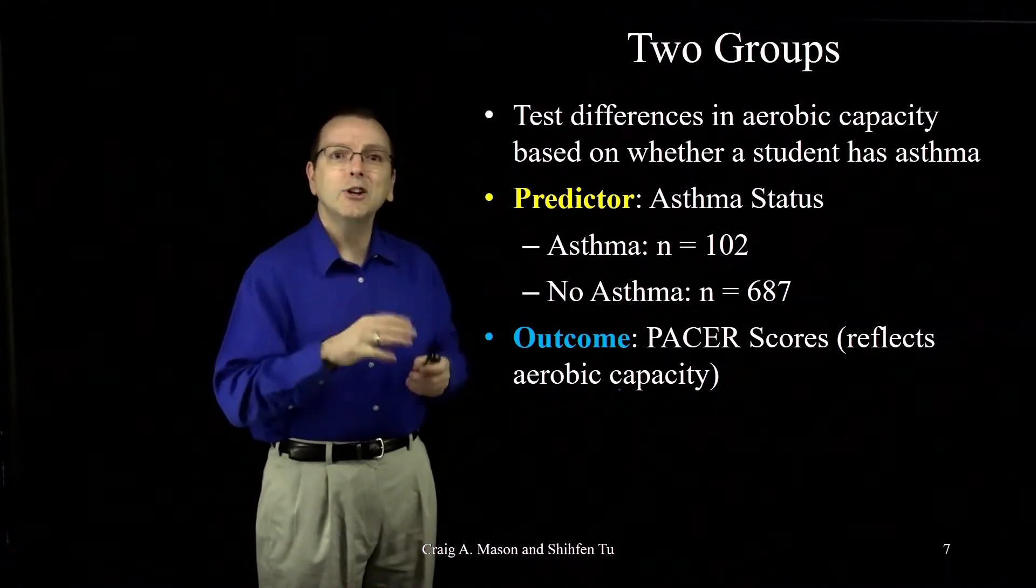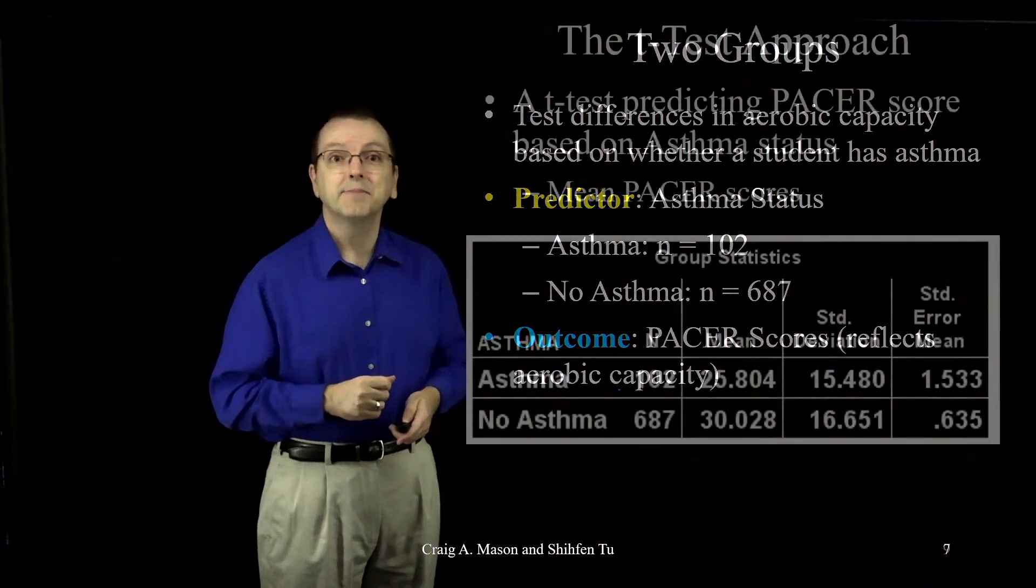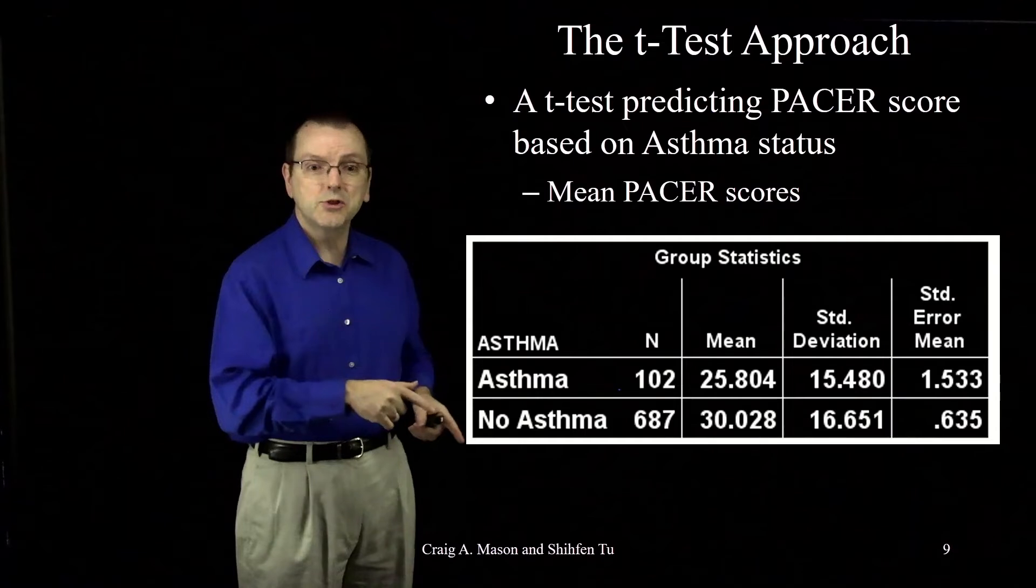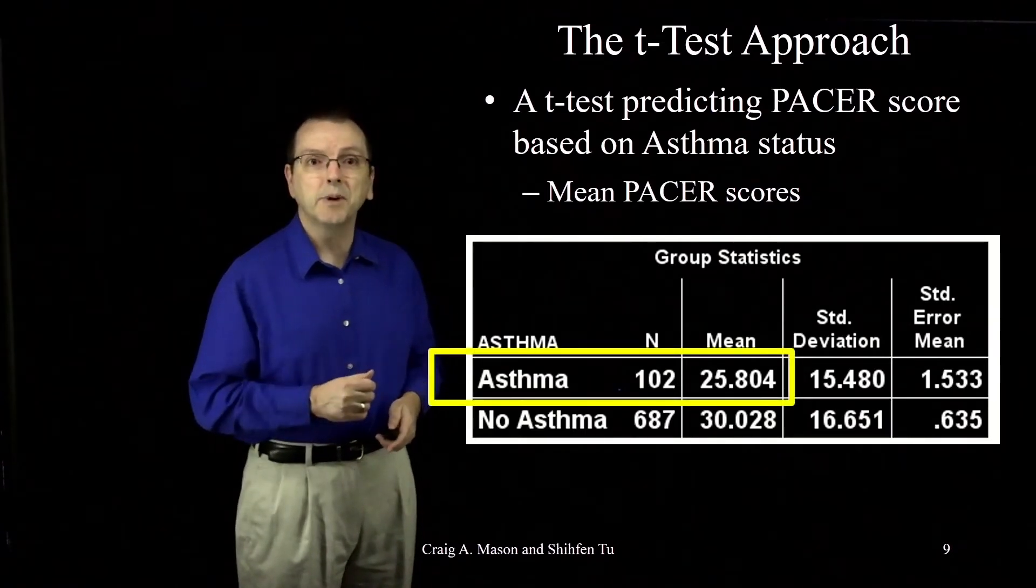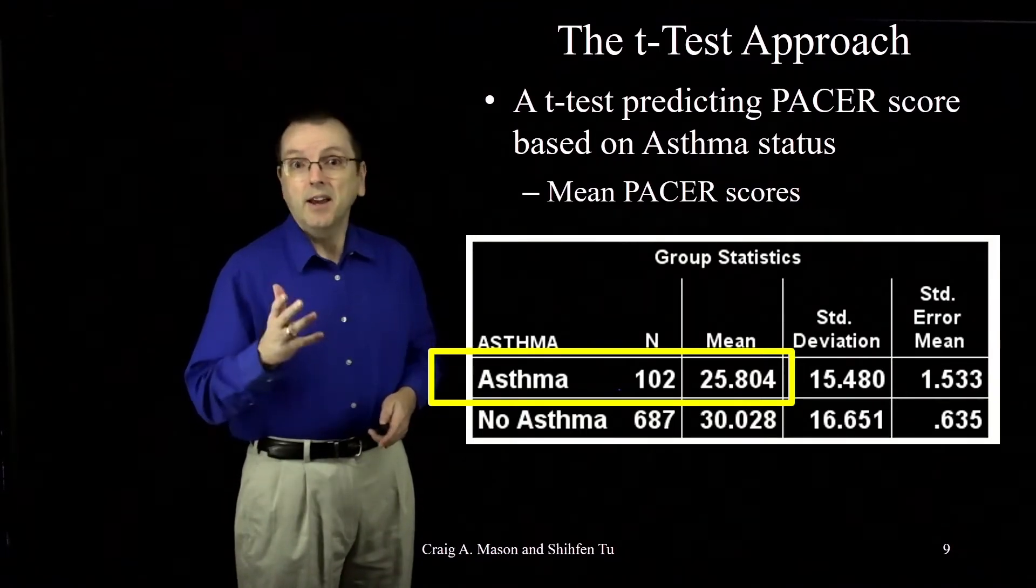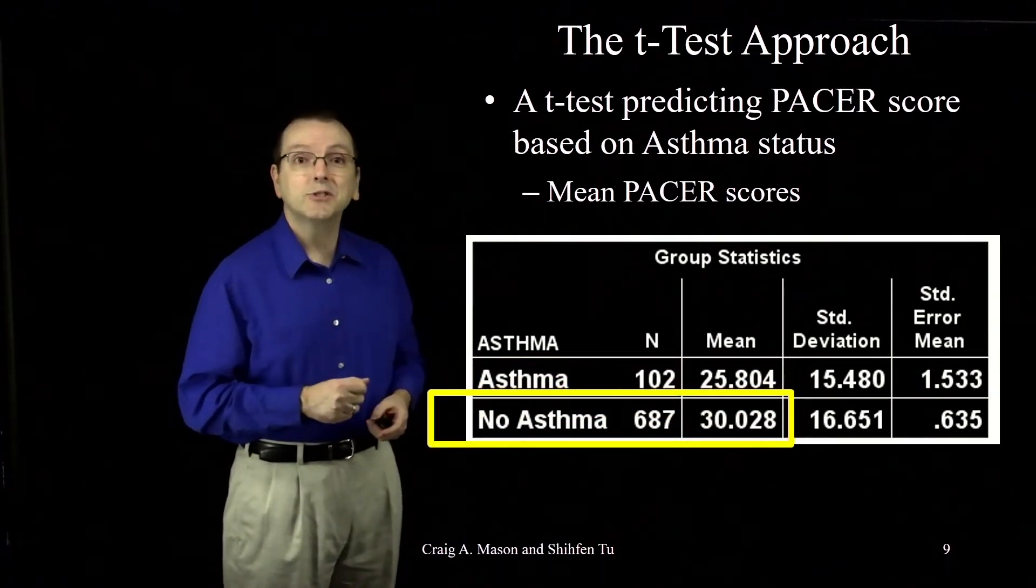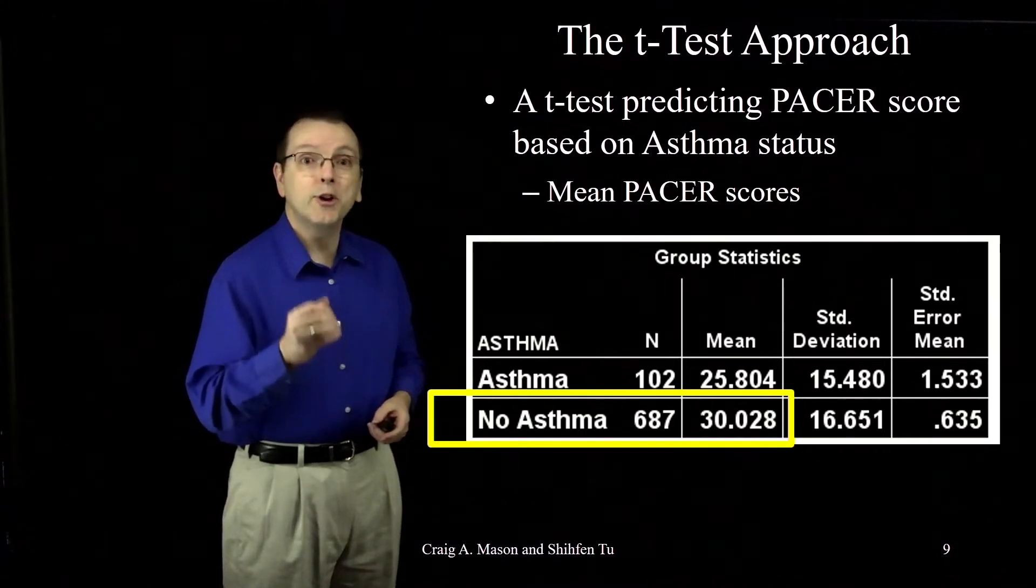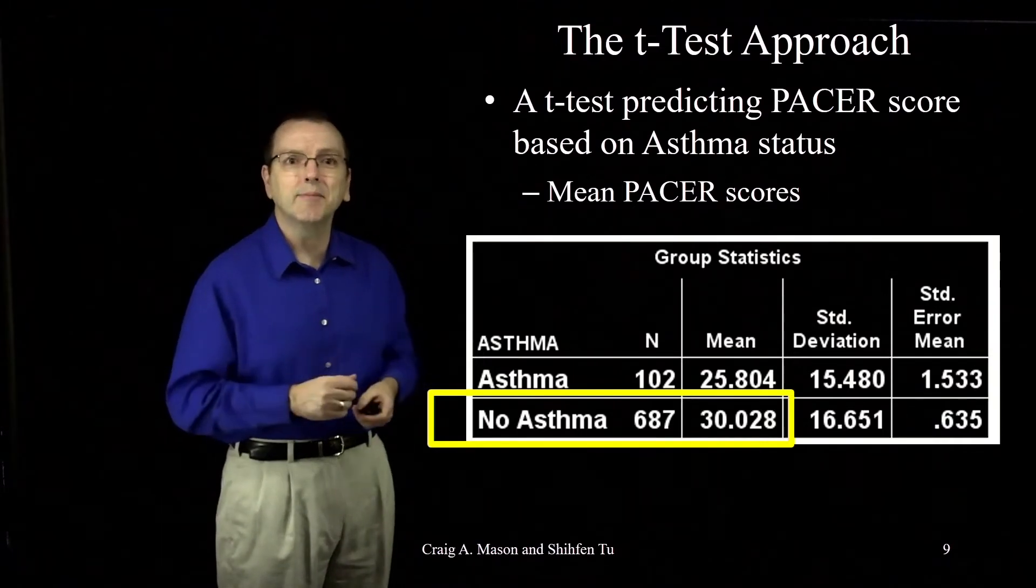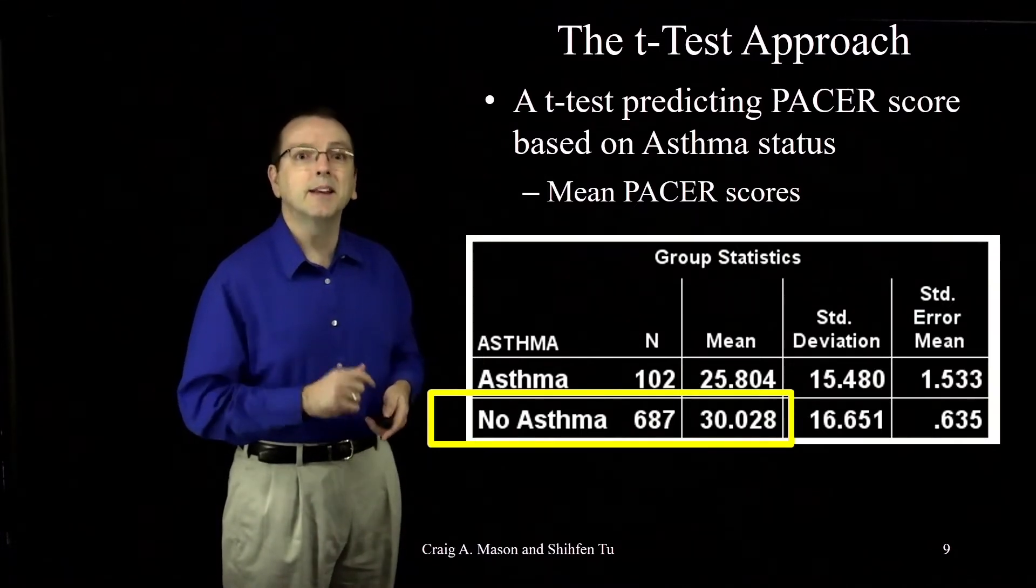So let's look at our results if we analyze this using two independent samples t-test. Okay, so here's our data. Notice there's two clear groups, 102 with asthma. They have a mean of 25.804 on the PACER. And we have 687 students without asthma. Notice they have a mean of 30.028 on the PACER. Higher scores, higher aerobic capacity. Now remember these two means because we're going to come back to them.